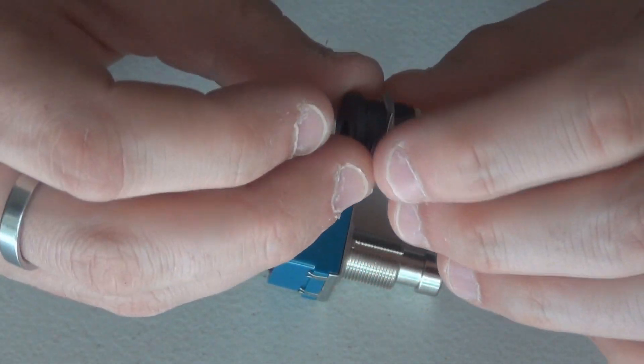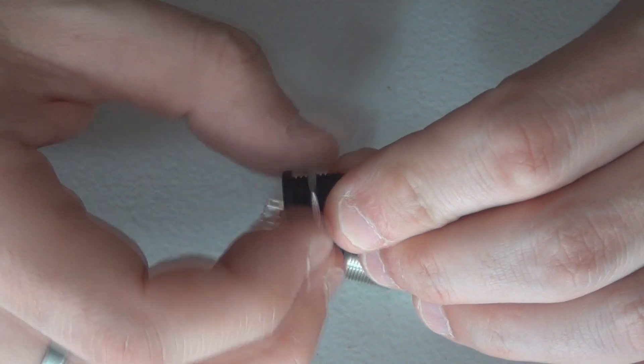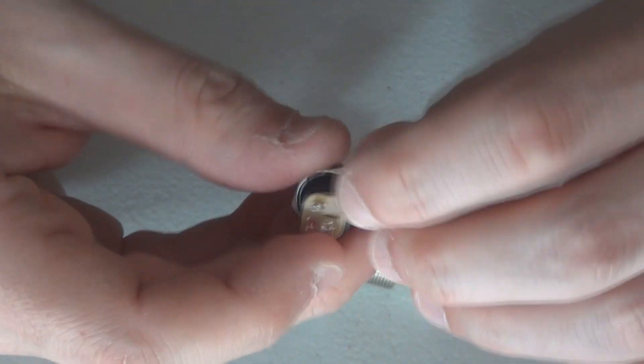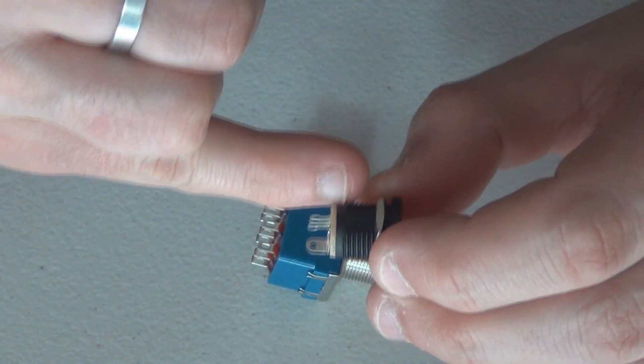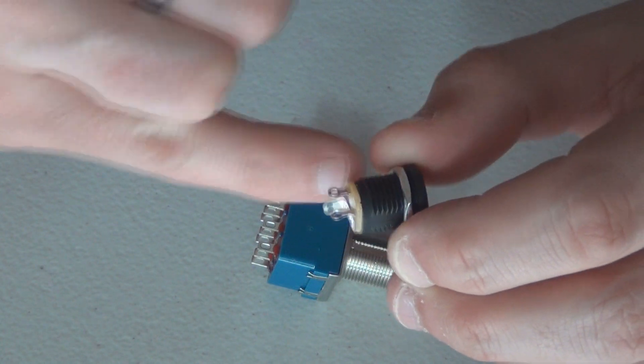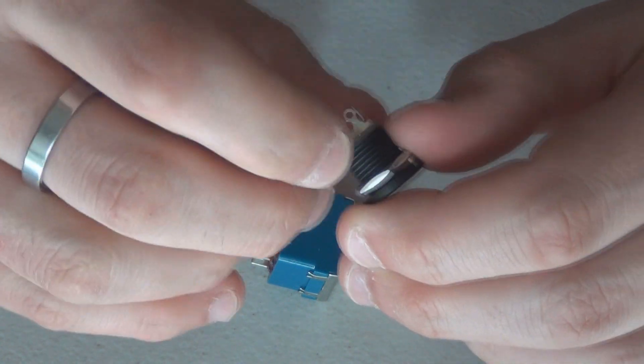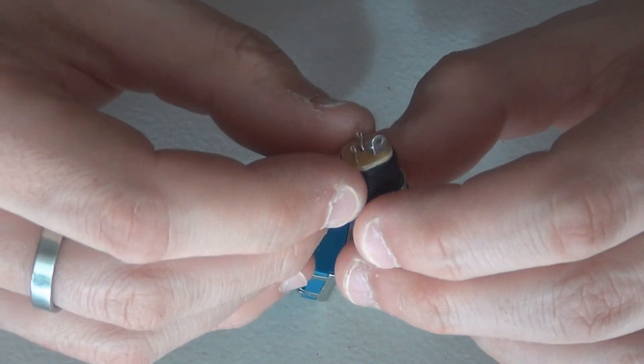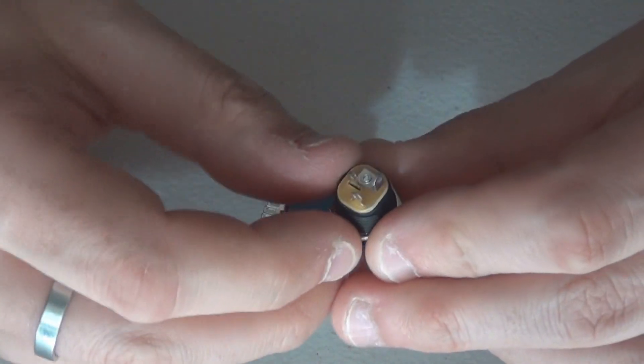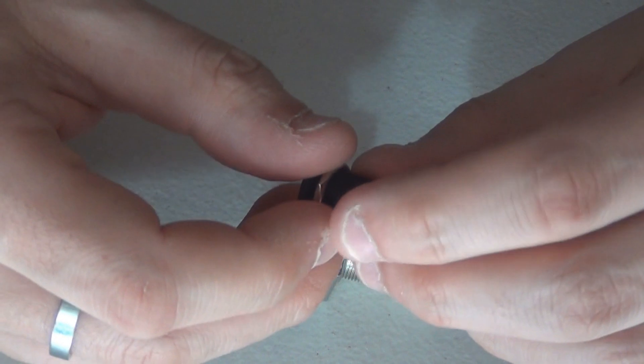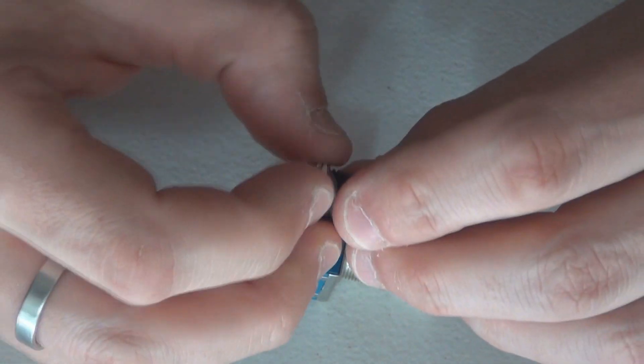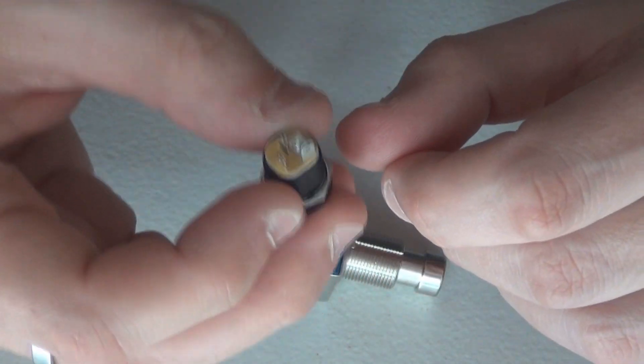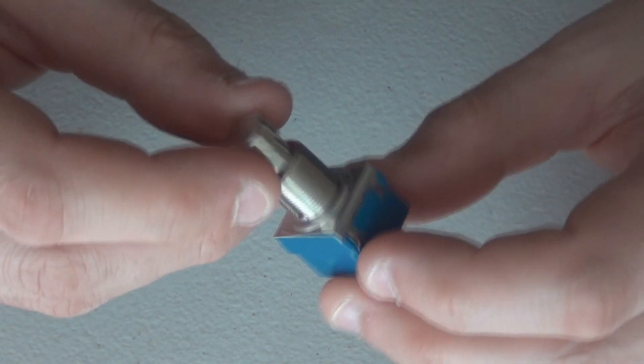You may have seen the previous video I did on this switching DC jack where I cracked one open and we looked at the mechanism inside that makes this DC jack switch power from DC to battery. If you haven't seen that one hopefully the little eye thing will pop up here so you can go to that video, but in this one we're going to open up the three pole double throw.